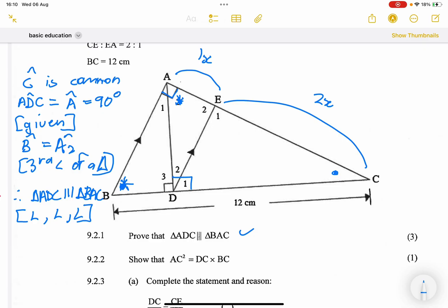Now, they say to us, show that AC squared is equal to DC multiplied by BC. So what you do, ladies and gents, you go to the very same proof that you've made. So we know that AD over BA